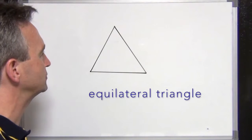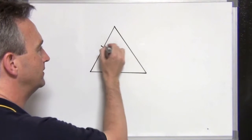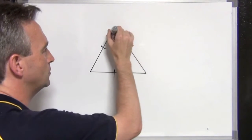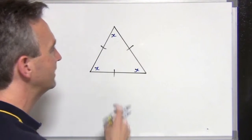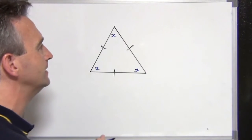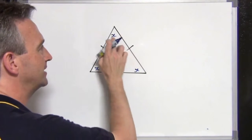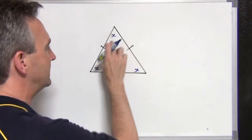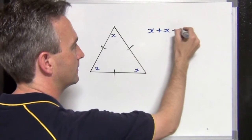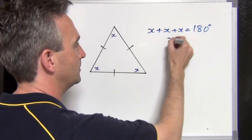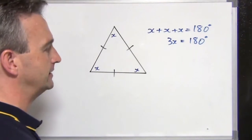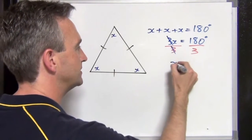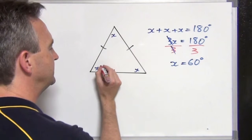Another type of triangle is the equilateral triangle. With an equilateral triangle, all three sides are equal. It can be shown that all three angles are also equal — I'll call them all X. We're not going to do the proof here, but from that we can deduce that all three angles are 60 degrees each. X plus X plus X must equal 180 degrees. So 3X equals 180 degrees, and dividing by 3 gives us X equals 60 degrees. Each of these angles is 60 degrees.